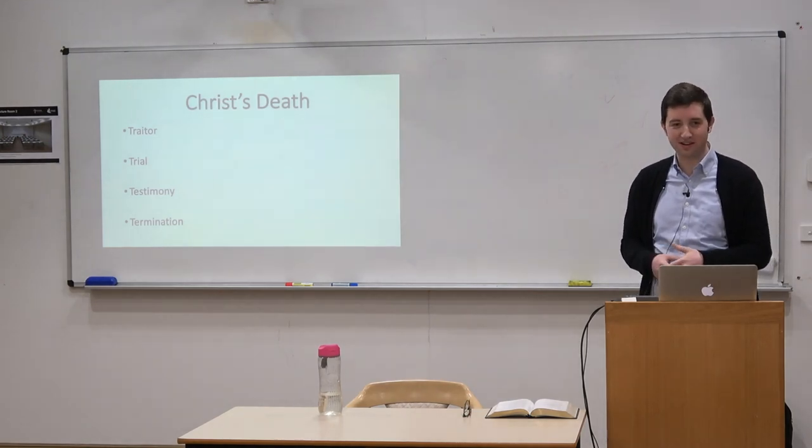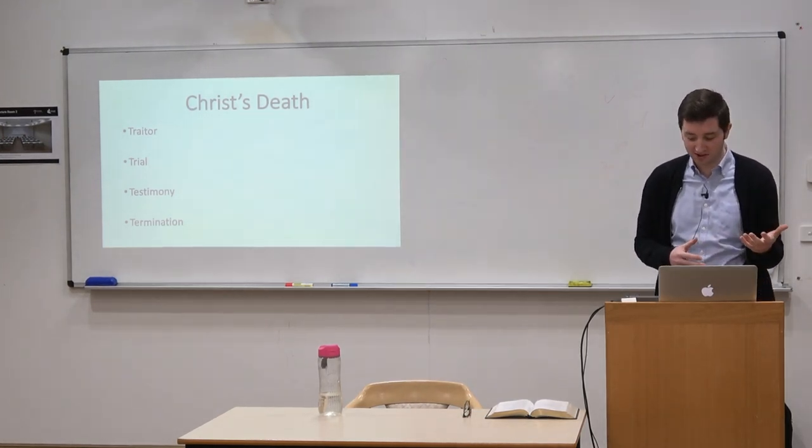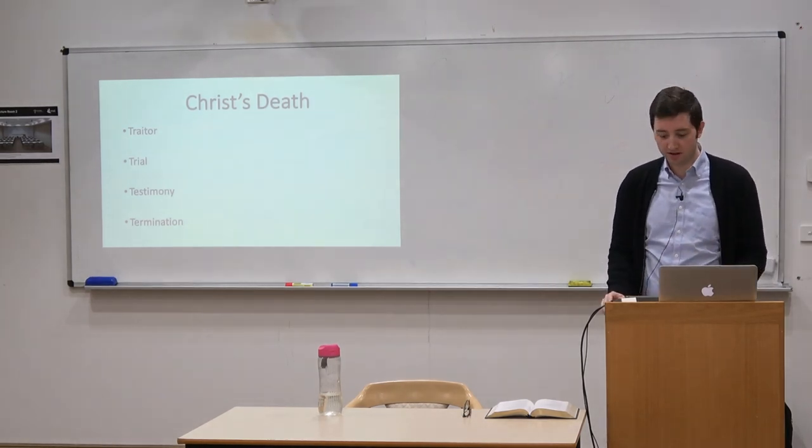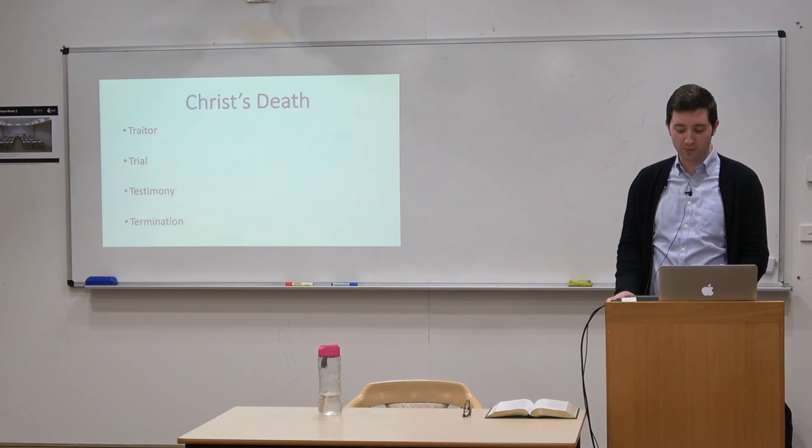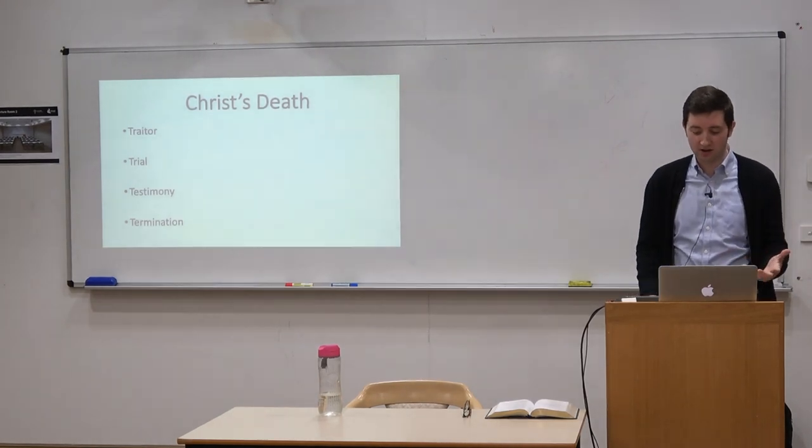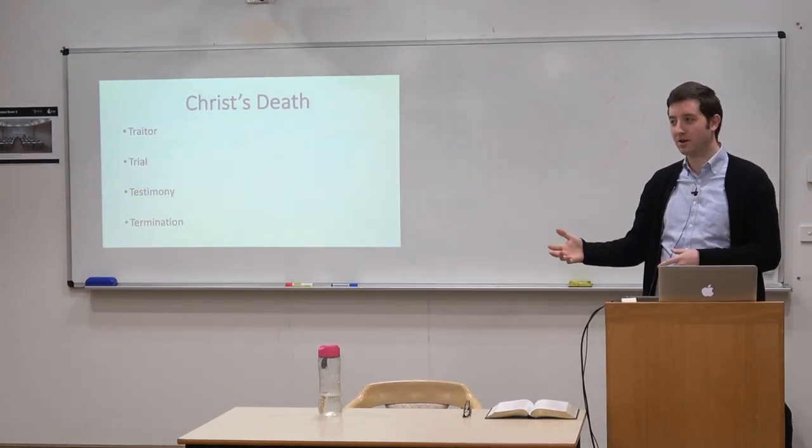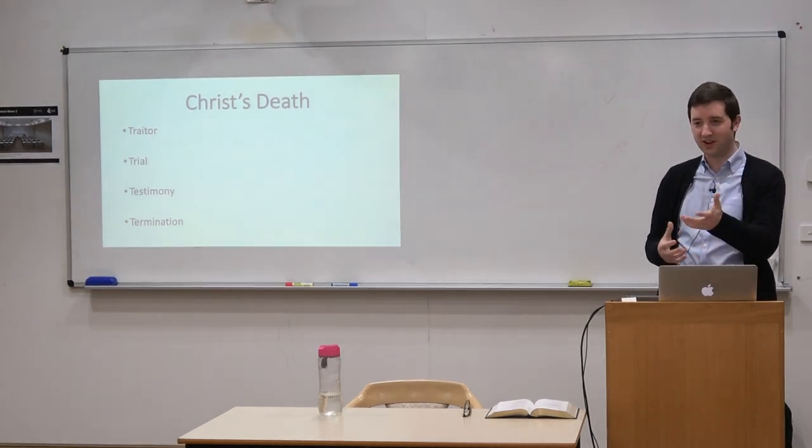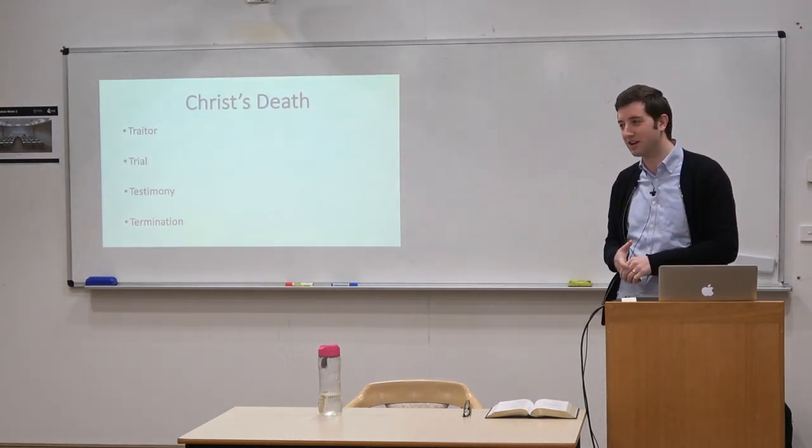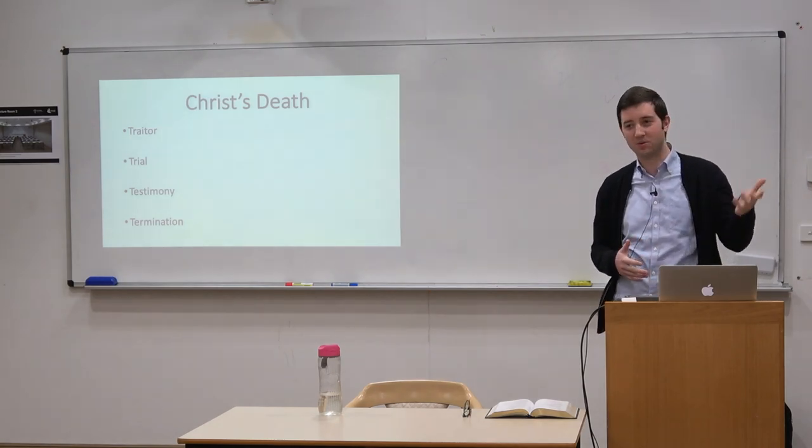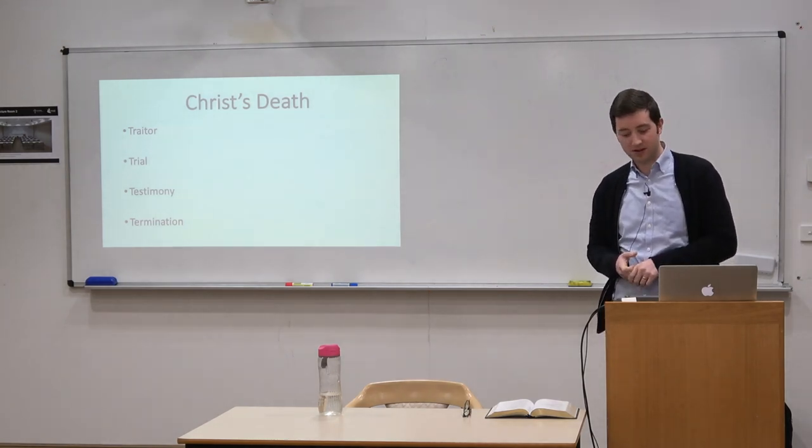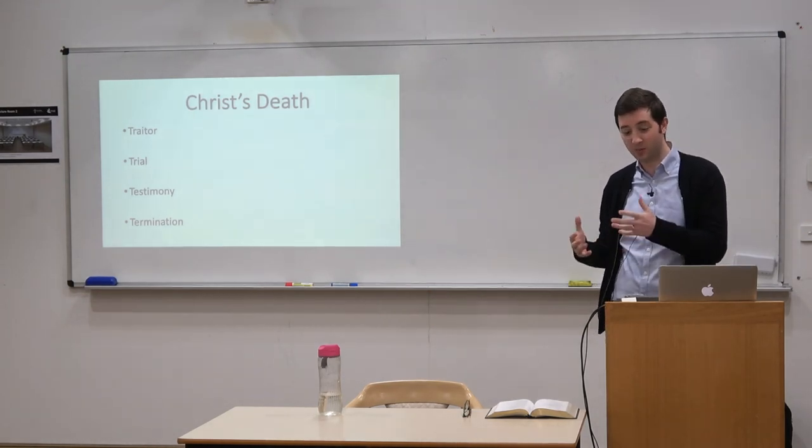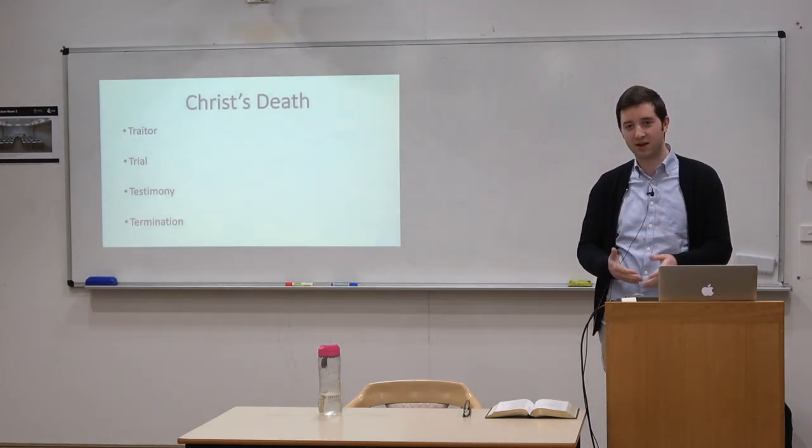So Jesus is the scapegoat. Jesus' blood is the blood that's sprinkled on the mercy seat. He is the one who paid the cost between the covenant of God and Abraham. He is like the bronze snake on the rod that when they look upon that snake they were saved. So there are so many pictures and they all point to Christ and so many of them point specifically to his death.